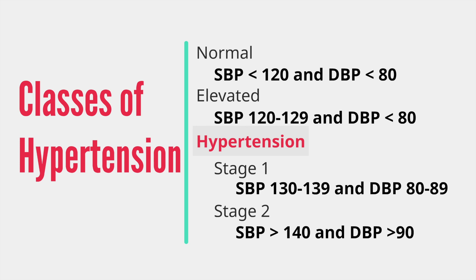We should take two good readings on two separate occasions to get an accurate average blood pressure. One of the reasons for this is that some people have what is called white coat hypertension, where the blood pressure is elevated in the clinic but not at home. Monitoring blood pressures at home is very important to differentiate if this is underlying hypertension or just anxiety causing a high blood pressure at their appointments.